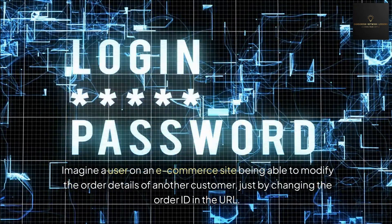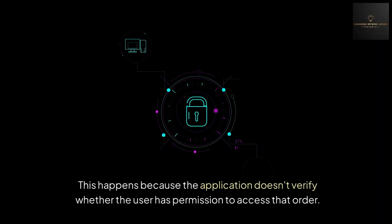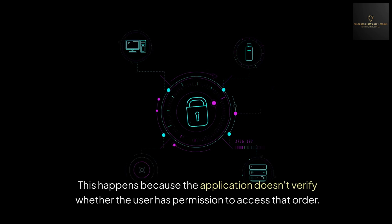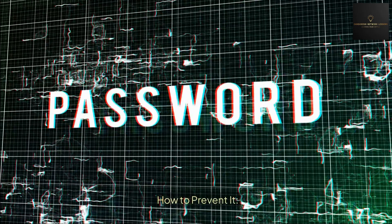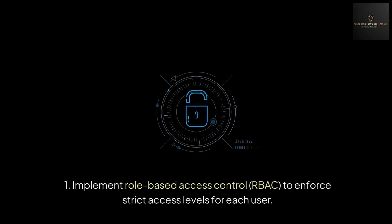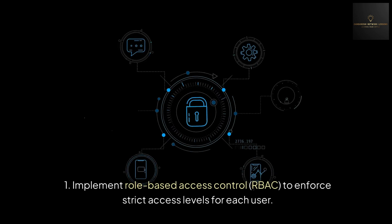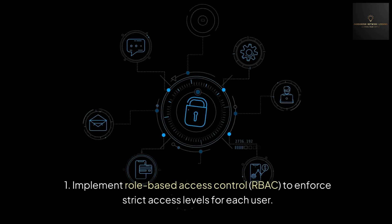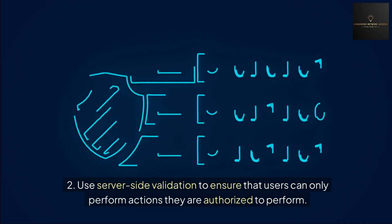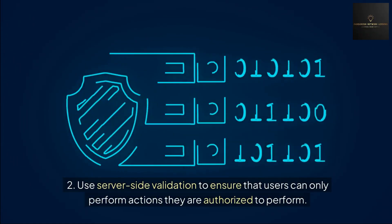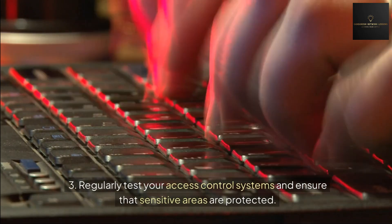This happens because the application doesn't verify whether the user has permission to access that order. How to prevent it: First, implement role-based access control (RBAC) to enforce strict access levels for each user. Second, use server-side validation to ensure that users can only perform actions they are authorized to perform.